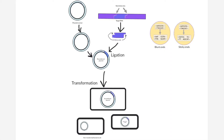First, the DNA segment that is to be cloned — the target DNA — is isolated. This is done by restriction enzyme digestion or PCR, in which restriction endonucleases cut the DNA at specific sites called restriction sites, producing sticky or blunt ends.